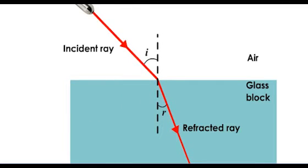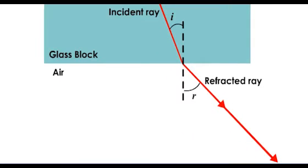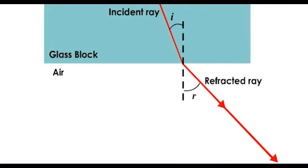Here, I is bigger than R. In other words, the ray is refracted towards the normal. When a ray of light travels from an optically less dense medium to an optically denser medium, it is refracted towards the normal. Here, I is smaller than R — the ray is refracted away from the normal.